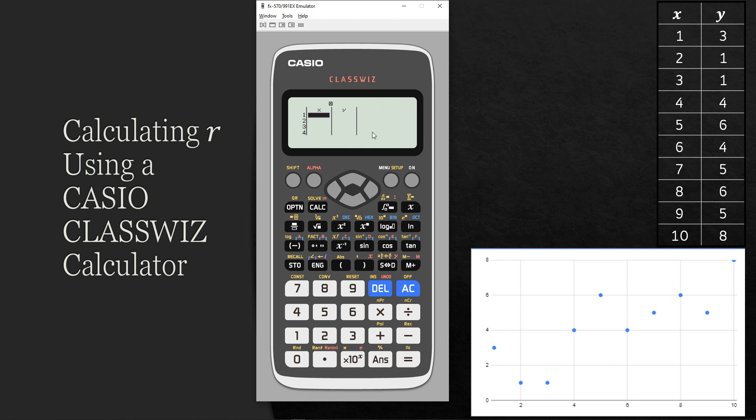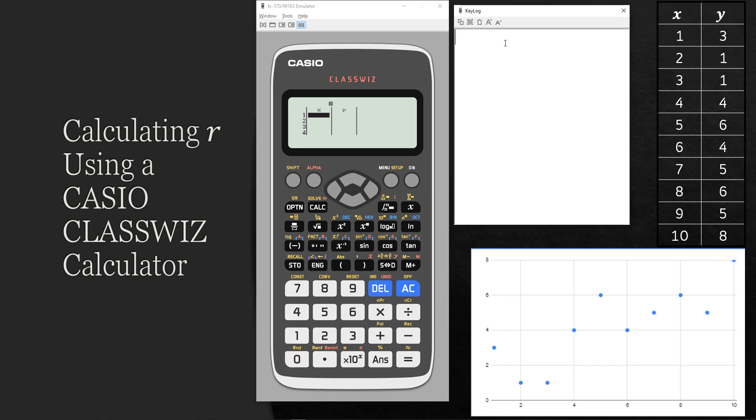You might see a third column which is frequency. If you do, that's fine, you don't need to turn it off. In this little window here you're going to see a log of all the buttons that I press. So if you miss one, you can either rewind the video or have a look at this key log to see what I pressed.